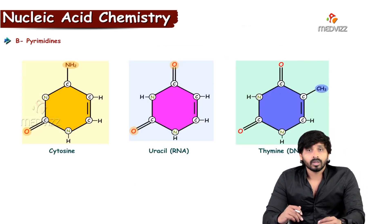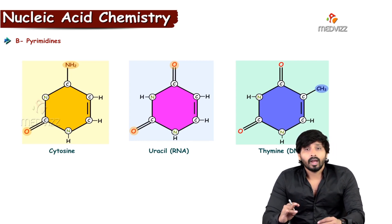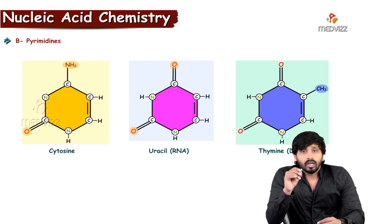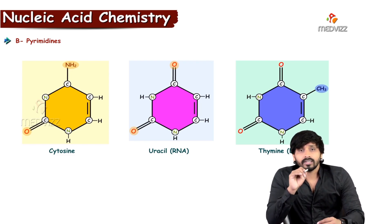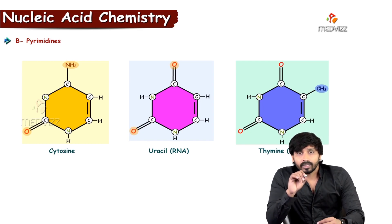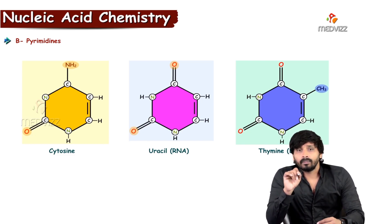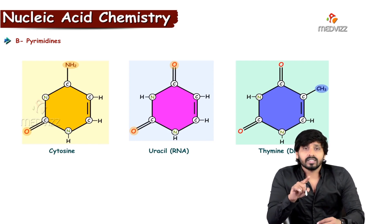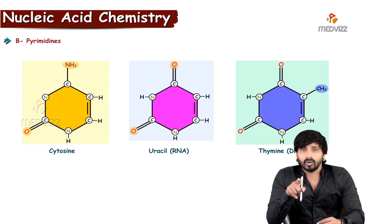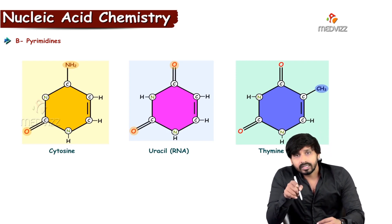Coming to pyrimidines, there are three: cytosine, uracil, and thymine. Cytosine and thymine are present in DNA; uracil is absent in DNA. In respect to pyrimidines, DNA carries only cytosine and thymine, but there is no uracil. This is reversed in RNA: RNA carries cytosine and uracil but not thymine. Thymine is restricted to DNA and uracil is restricted to RNA.